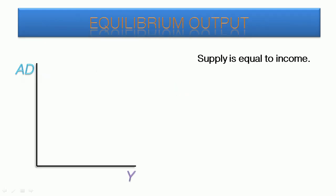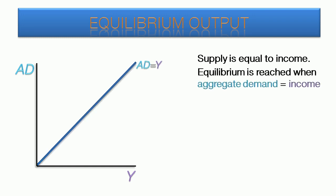In this model, aggregate supply is equal to income at any point in time. Therefore, supply equals demand when aggregate demand equals income. When we have aggregate demand on the y-axis and income on the x-axis, equilibrium is reached at any point on this 45-degree angle, where the values for both axes are equal.